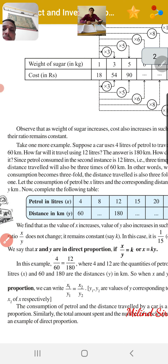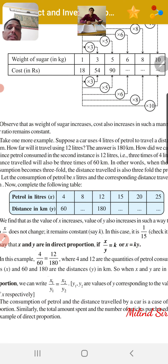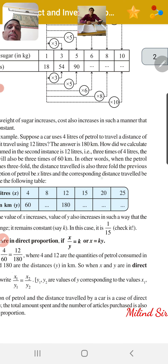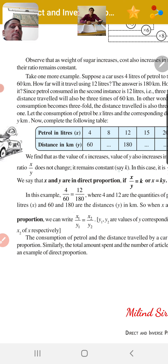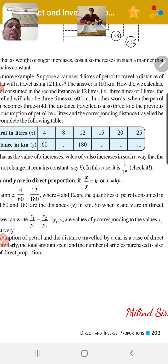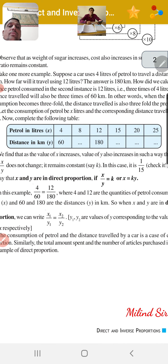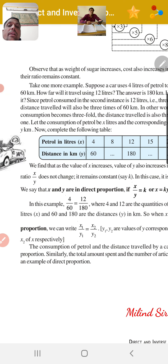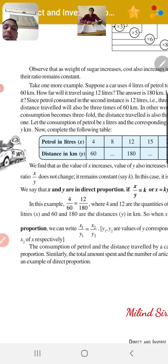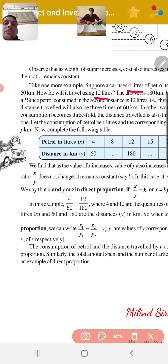Observe that as the weight of sugar increases, the cost also increases, in such a manner that the ratio remains constant. Take one more example: suppose a car uses 4 liters of petrol to travel a distance of 60 km. How far will it travel using 12 liters? Since 12 is 3 times 4, the distance will be 3 times 60, which is 180 km.